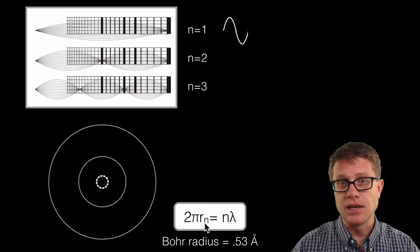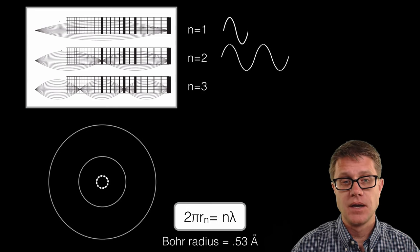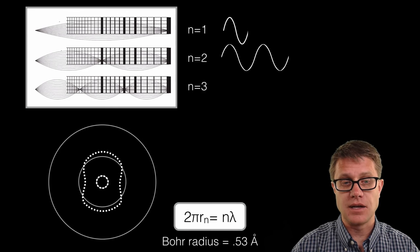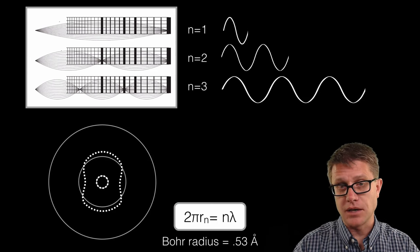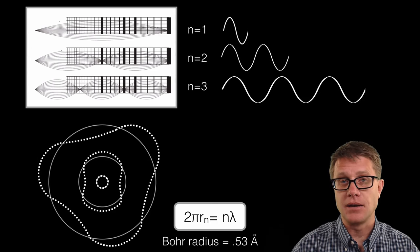Now what is the next level going to look like? Well we have to have two wavelengths in there. So what is that going to look like? It looks like that. And if we go to three wavelengths, we are going to have a different de Broglie wavelength. And so what are we going to get? It is going to wrap around like that.